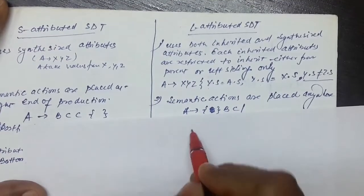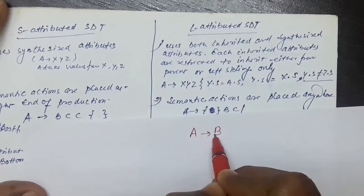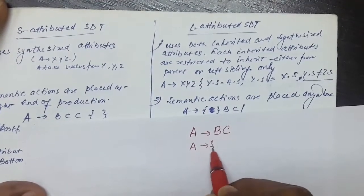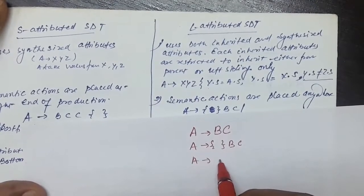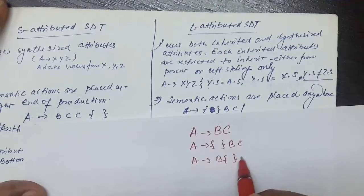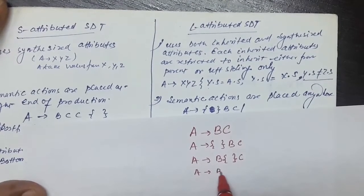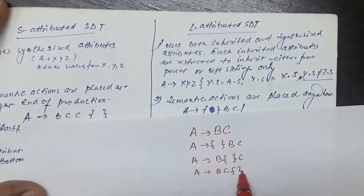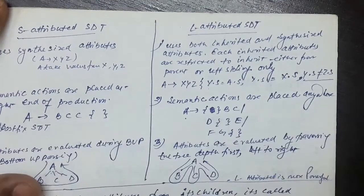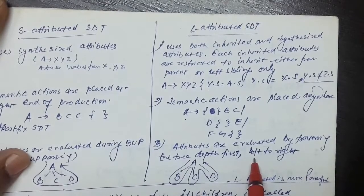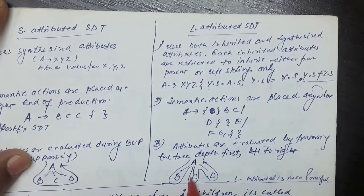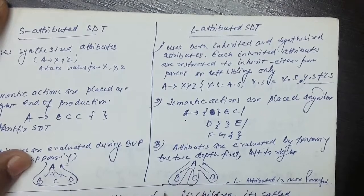For a production of kind A produces BC, the semantic rule can be placed at the very beginning, in between, or at the end. The semantic rule may be placed at any position on the right-hand side. Attributes are evaluated by traversing the tree depth-first, left to right — the depth is completed first, then we move right.